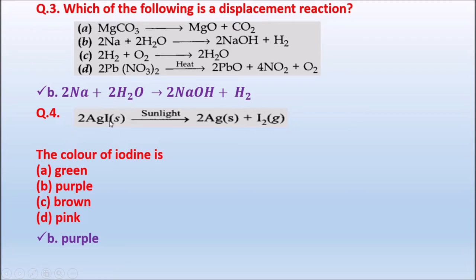Question 4: 2AgI (silver iodide) in the presence of sunlight gives 2Ag(s) + I₂(g). In this reaction, what is the color of iodine? Option A: Green. Option B: Purple. Option C: Brown. Option D: Pink. The correct answer is purple — the color of iodine is purple.